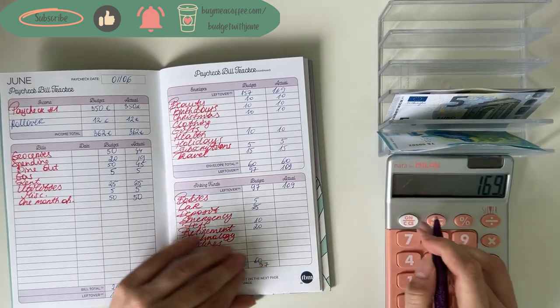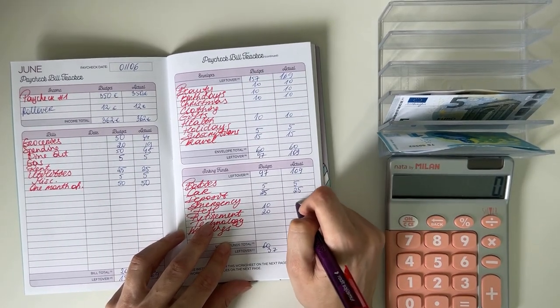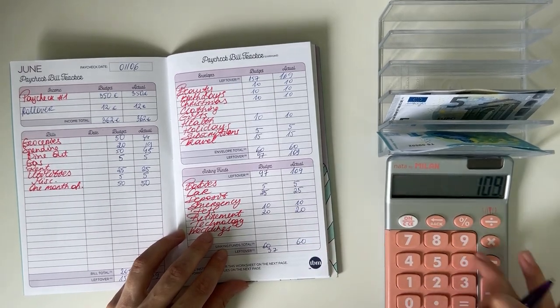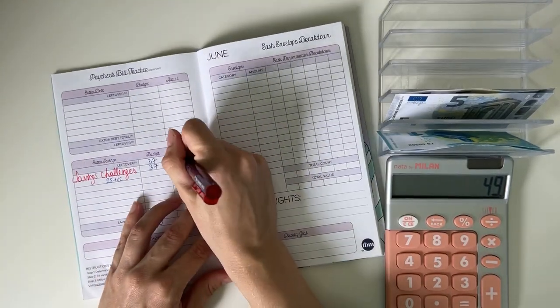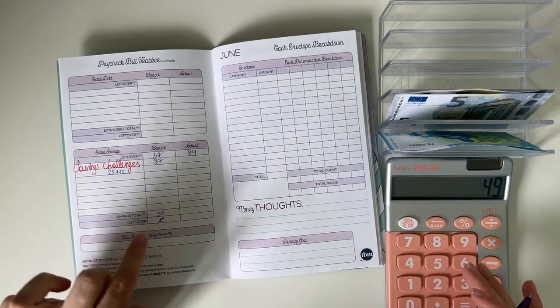109 in long-term sinking funds. Car got 5, deposit 25, pets got 10, retirement 20. That was 60, so 109 minus 60 was 49.